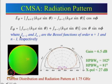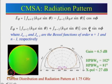Along the broadside direction θ = 0, so cos 0 = 1 and the Eφ term is non-zero. Along θ = 90°, cos 90° = 0, so that component goes precisely to 0. These derivations are valid only for an infinite ground plane, not a finite one.